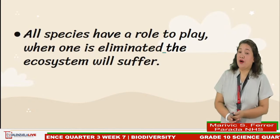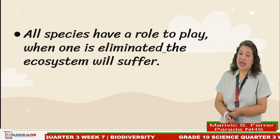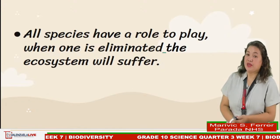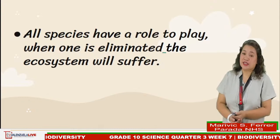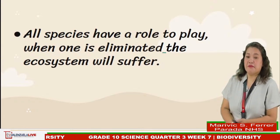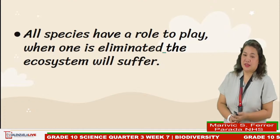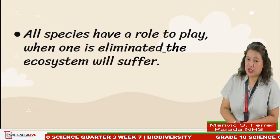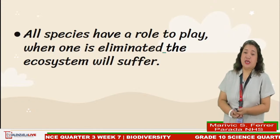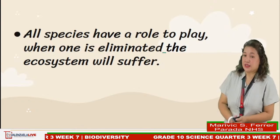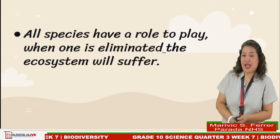What will happen if an organism is removed from the ecosystem? Since all species have a role to play, when one is eliminated, the ecosystem will suffer. Minor disruptions in a particular ecosystem tend to lead to changes that eventually restore the system. But large disturbances of living populations or their environment may result in irreversible changes. Maintaining diversity increases the likelihood that some varieties will have characteristics suitable for survival under changing conditions.